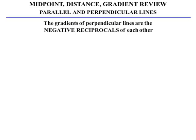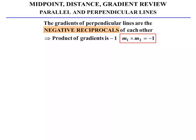The gradients of perpendicular lines are the negative reciprocals of each other. The product of the gradients equals minus 1: M1 times M2 equals minus 1. For example, if the first gradient was 3/2, then the perpendicular gradient would be minus 2/3 — we take the negative and flip the fraction. If the gradient was minus 2, the perpendicular gradient would be 1/2 — we change the negative to positive and flip the 2 to make it a half.